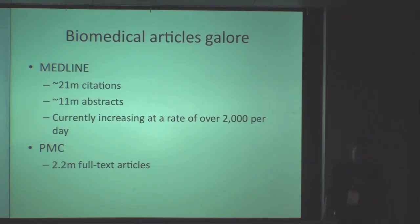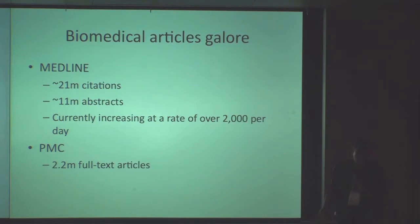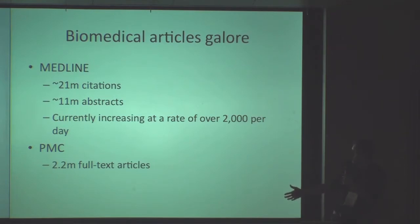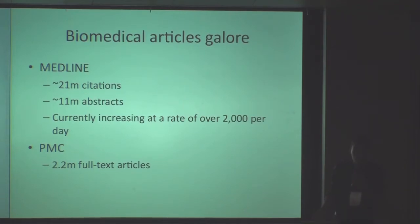We have a lot of articles, and these articles contain information — the numbers are really quite staggering. There are 21 million citations or so in PubMed; about 11 million of those have associated abstracts, and currently that's increasing at a rate of about 2,000 per day. In PubMed Central, which contains full text articles, we have over 2 million articles. This knowledge is so vast that even for limited subdomains, it becomes difficult for researchers to keep up to date and to extract information.